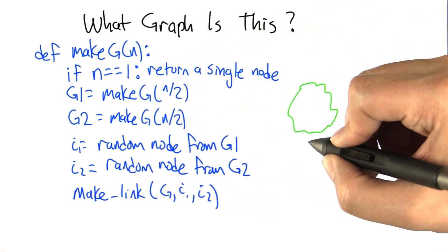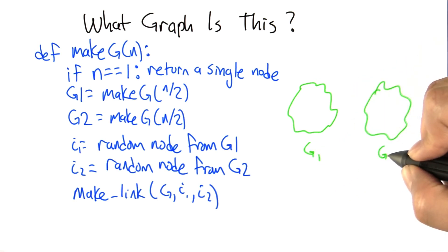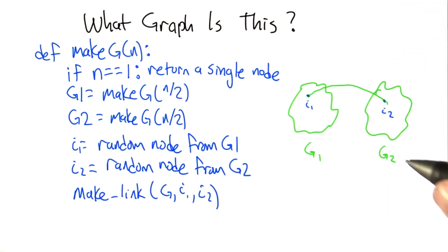So at a high level, we create graph g1, we create graph g2, we pick a random node i1, pick another random node i2, and we link them together. Now in this picture, it's not really clear what's going on inside of these. What I'd like you to do is figure it out.